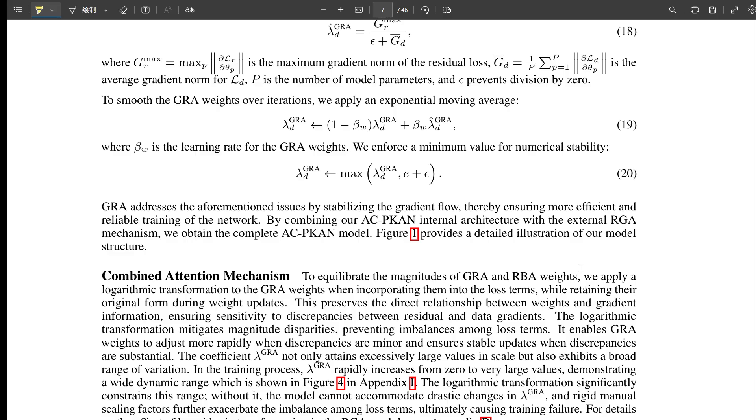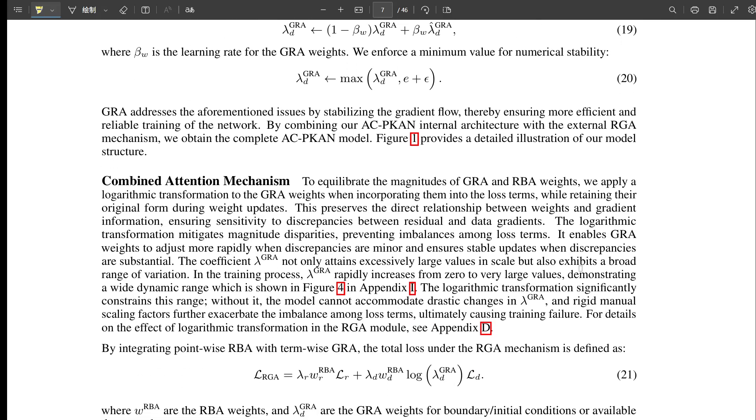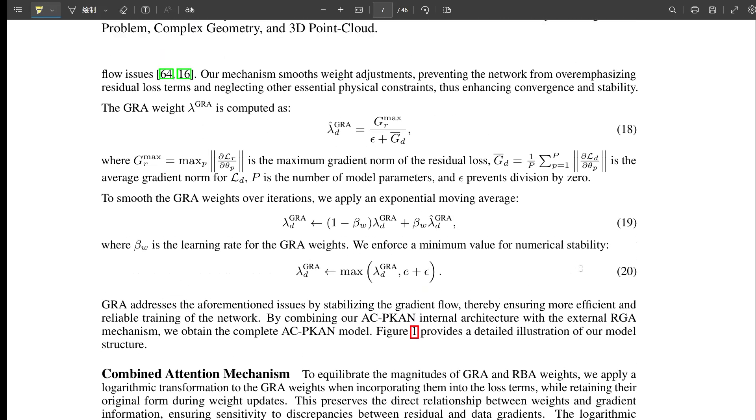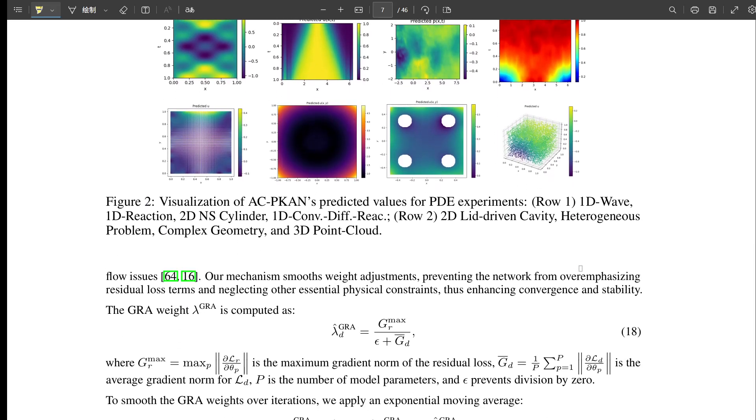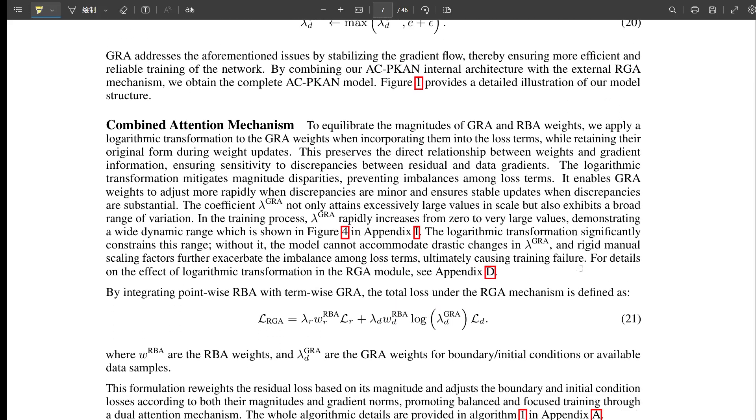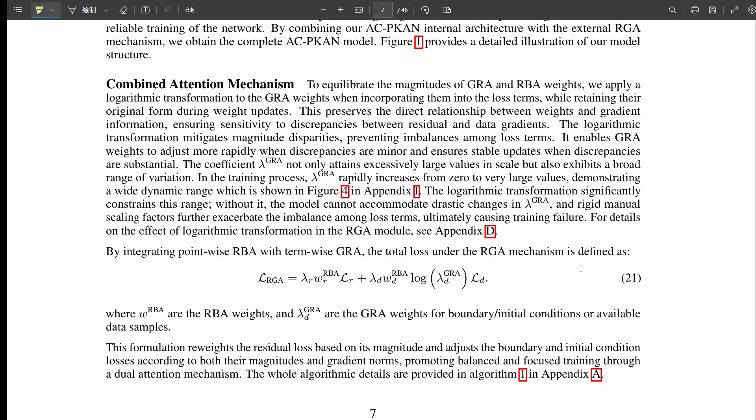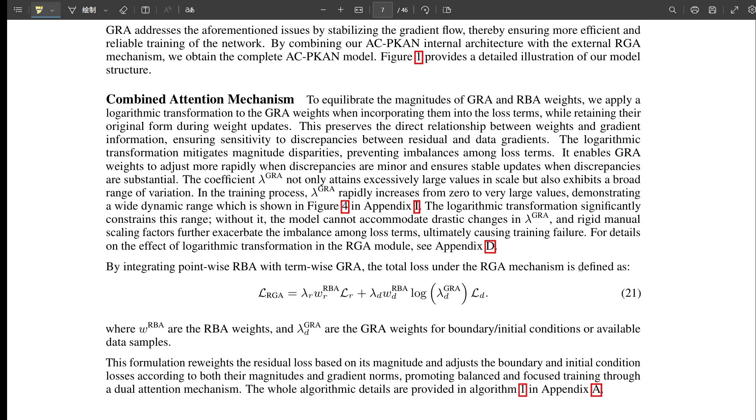What about efficiency? Does all this extra attention machinery make it super slow or memory hungry? The paper touches on it briefly. A single Chebyshev-1-CAN layer has a time complexity related to batch size, dimensions, and the number of polynomials. Memory depends on storing coefficients and activations. The attention inevitably adds some computational overhead. But the argument is that the significant performance boosts - the better accuracy and stability on hard problems - likely justifies that extra cost in many situations. They do provide actual running times for their experiments in Table 8 in the appendix.